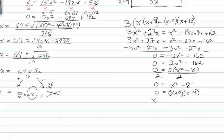Setting the factors equal to zero, we get x is equal to negative nine and x is equal to positive nine. Obviously, you can't have a negative distance, and so the side of our rectangle is nine.